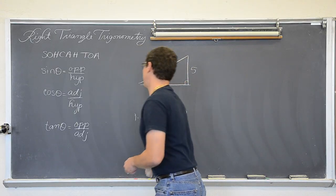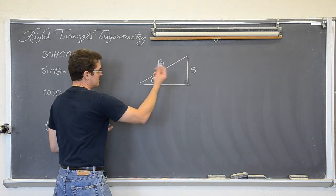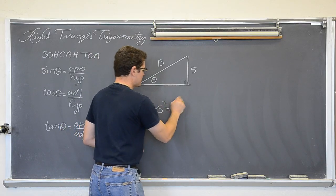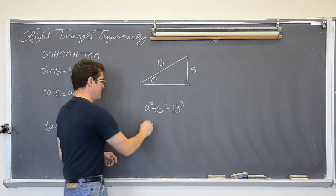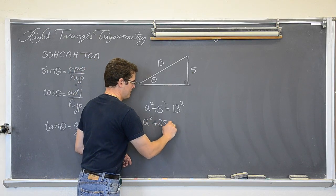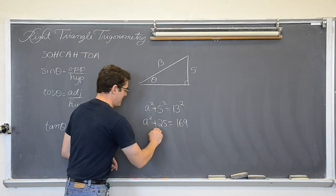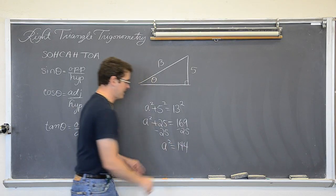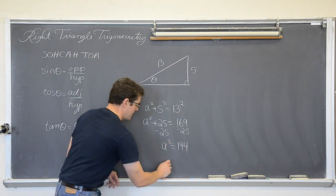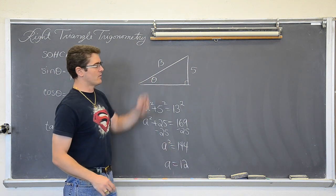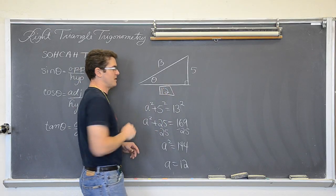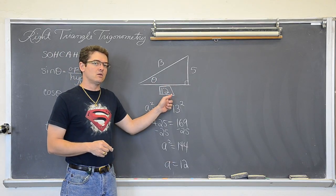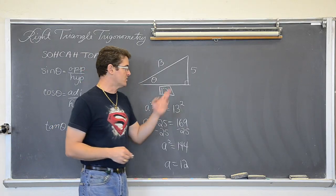We are going to find the missing side by the Pythagorean Theorem: a squared plus b squared equals c squared. So that is a squared plus 25 equals 169. Subtract both sides by 25, and we get a squared equals 144. Then we square root both sides and get an answer of 12. And if you know your Pythagorean triples, you might have already known that the missing side was going to be 12. The Pythagorean Theorem is what you use to find a missing side of a right triangle when you know two of them.